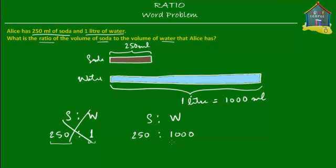Now 250 and 1,000 are big numbers and it takes a moment to figure out how much soda she has compared to water. So let's simplify: cancel the trailing zeros to get 25 and 100. Then divide each term by 25 — 25 divided by 25 is 1, and 100 divided by 25 is 4, since 25 goes into 100 four times. So the simplified ratio is 1 to 4.